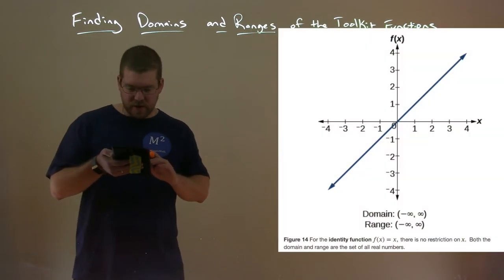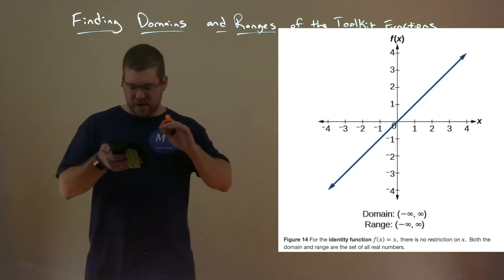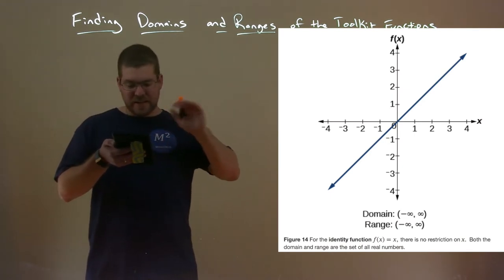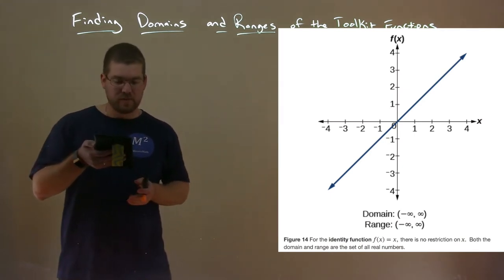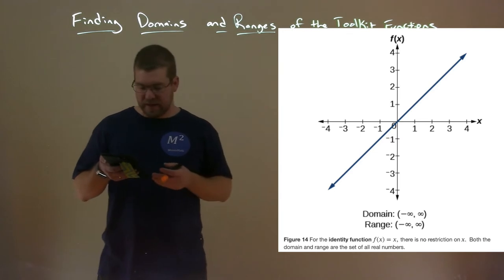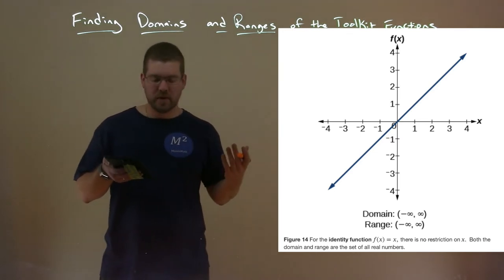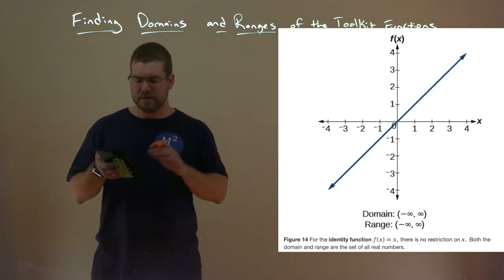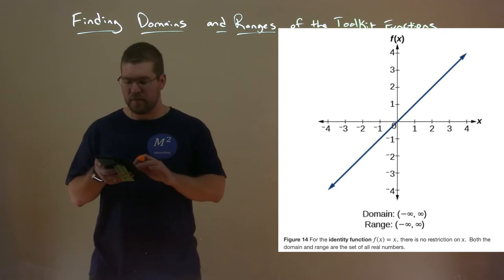The next one is the identity function f of x equals x. This goes through the origin, and its domain is from negative infinity to positive infinity, and its range is negative infinity to positive infinity.